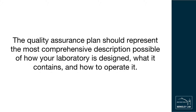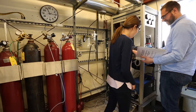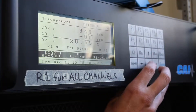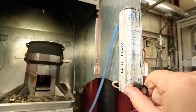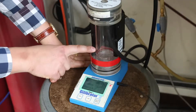While the quality assurance plan is useful as a master document for describing a testing laboratory, it is not typically referenced on a day-to-day basis. For common day-to-day tasks, we recommend writing a standard operating procedure. Standard operating procedures provide explicit step-by-step instructions on how to perform common tasks within the laboratory. For example, our laboratory has standard operating procedures for preparing and calibrating equipment before an experiment, zeroing and spanning the gas analyzer, validating duct and sample flow rates, conducting a standard water boiling test, validating collected data during the experiment, and shutting down equipment after experiments are complete.